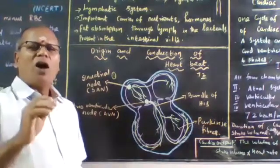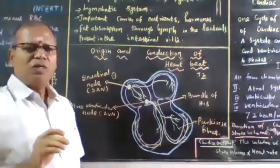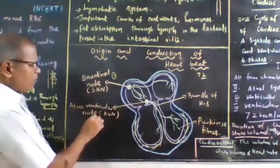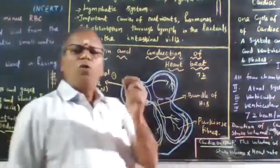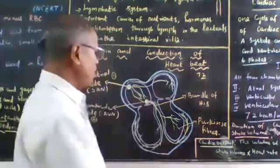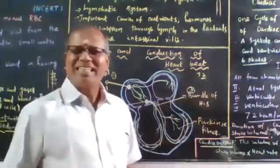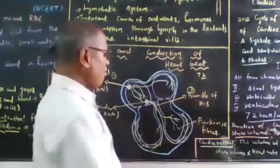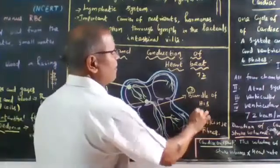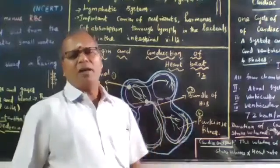Sino-auricular node. Second is atrioventricular node. Third is bundle of Hiss. And fourth is Purkinje fibers.